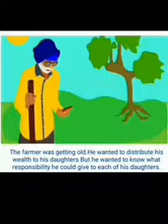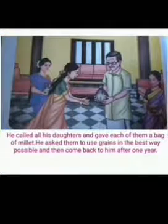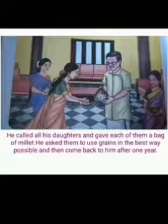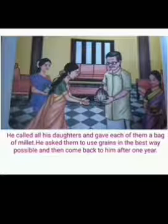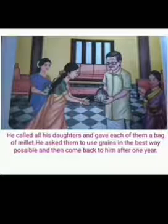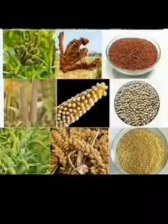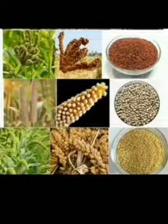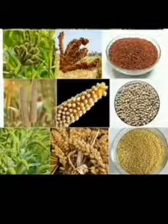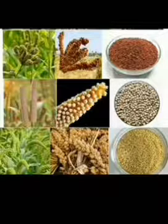In last class we learnt the test — the wealthy farmer is getting old, so he wanted to distribute his wealth to his daughters, and he kept a test upon it. He called all his daughters and gave each of them a bag of millets. He asked them to use the grains in the best way and come back after one year. You already know about millets — it is just like a grain.